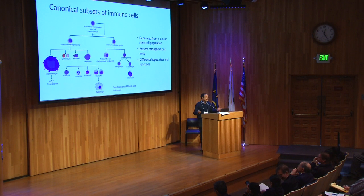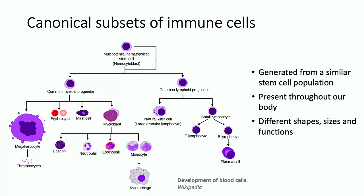There are many different cell types present in an inflamed tissue. Many of them are generated from the same precursor population, like hematopoietic stem cells, and they are present throughout our body. But they are very different from each other — different sizes, different shapes, different functionality — even though they develop from the same precursor.